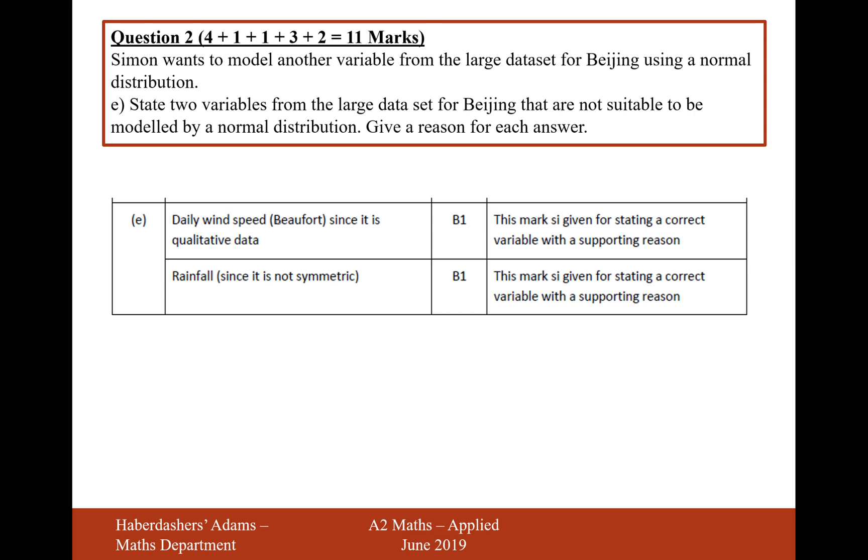Daily wind speed on the Beaufort scale, so that's the light, calm, calm to light, et cetera. We wouldn't be able to do the normal distribution with that because it's not quantitative data, it's qualitative data.